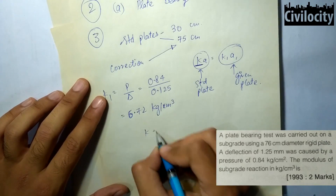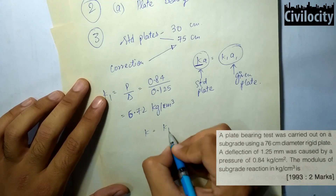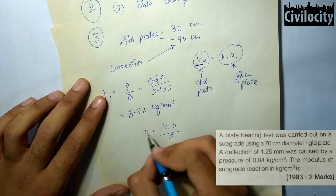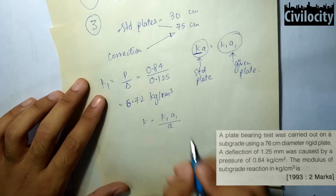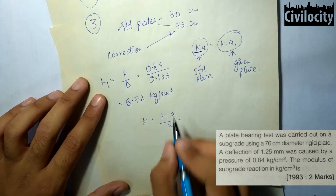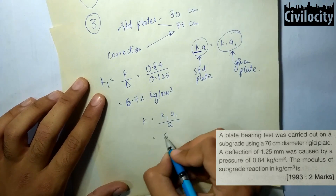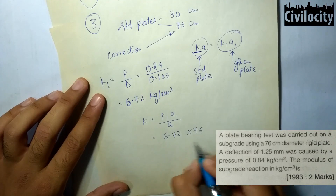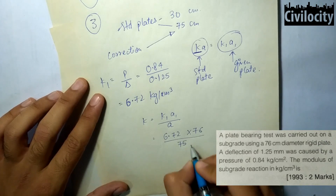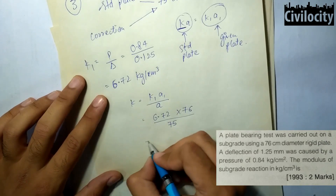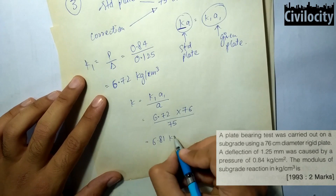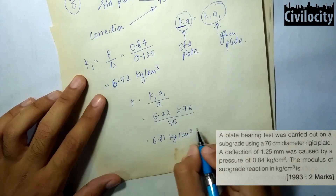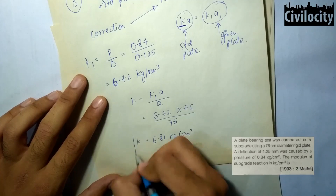Now, find the modulus of sub-grade reaction for the standard 75 cm diameter plate using K = K₁·A₁ / A = 6.72 × 76 / 75, which gives 6.81 kg per cm³. This is the answer for this question.